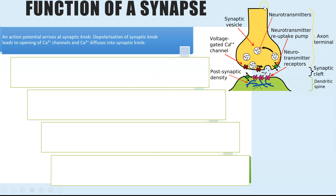Step one: an action potential arrives at the end of the neuron — we call the end of the neuron the synaptic knob. An action potential would be arriving at that location in response to a stimulus. What that causes to happen is there are calcium ion channels in the plasma membrane of the synaptic knob. When that action potential arrives it causes those voltage-gated calcium ion channels to open, and therefore calcium ions diffuse into the synaptic knob.